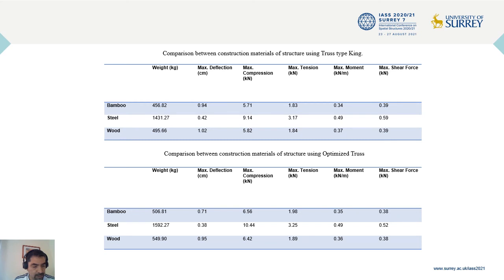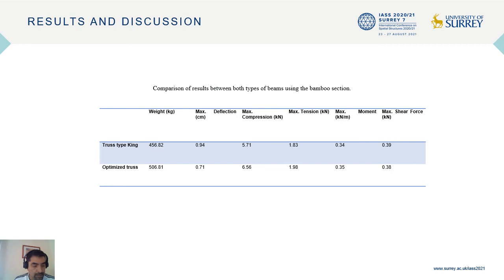After the simulation is running, the results are compared against a wooden structure, where similar values were expected. The results obtained for bamboo and wood materials are similar. The simulation shows that the bamboo structure is approximately 10% lighter, in addition to obtaining lower deflections of approximately 8% in the truss type kink and 25% lower in the optimized truss. In the largest axial stresses in the truss type kink, the bamboo section obtains lower results compared to the optimized trusses.